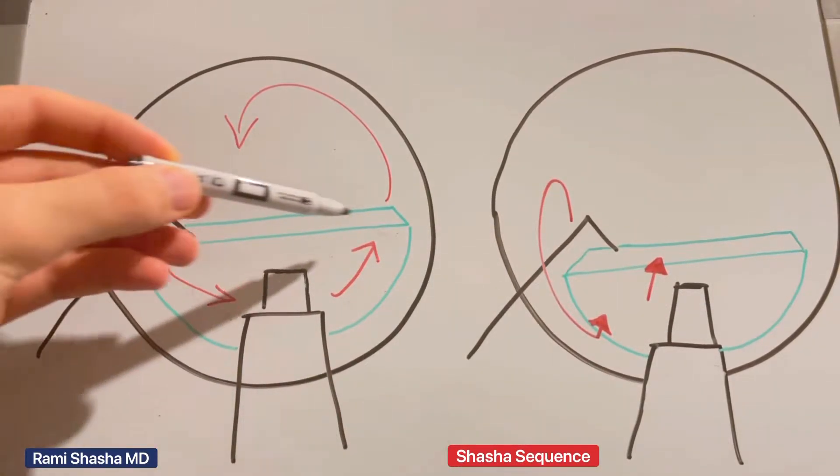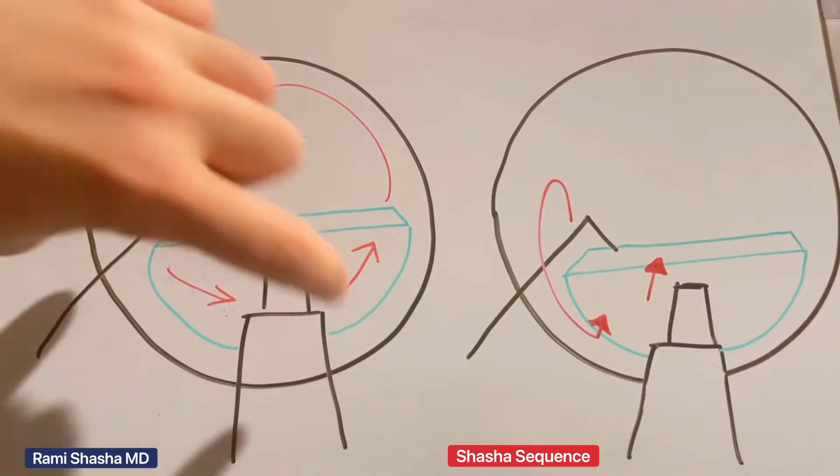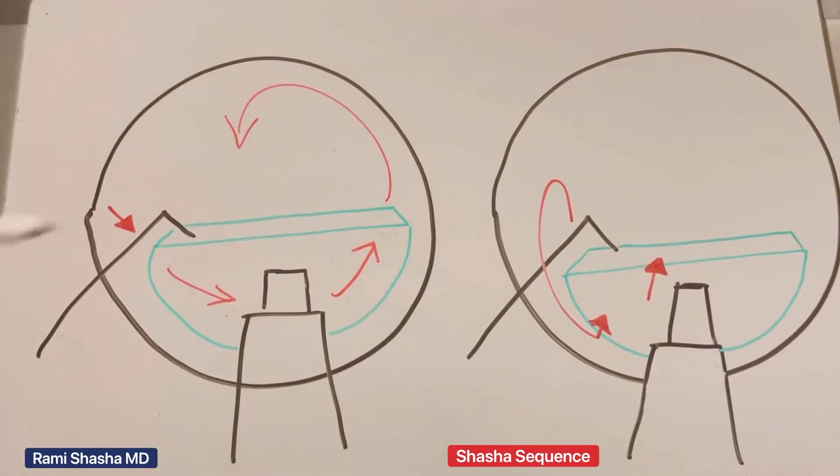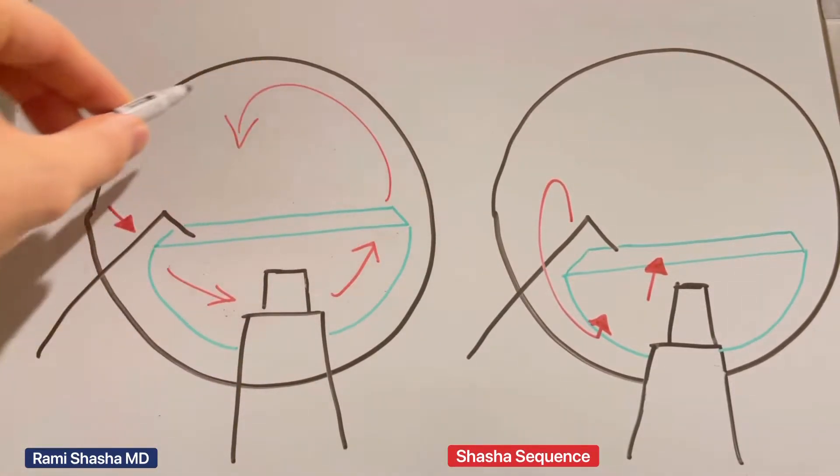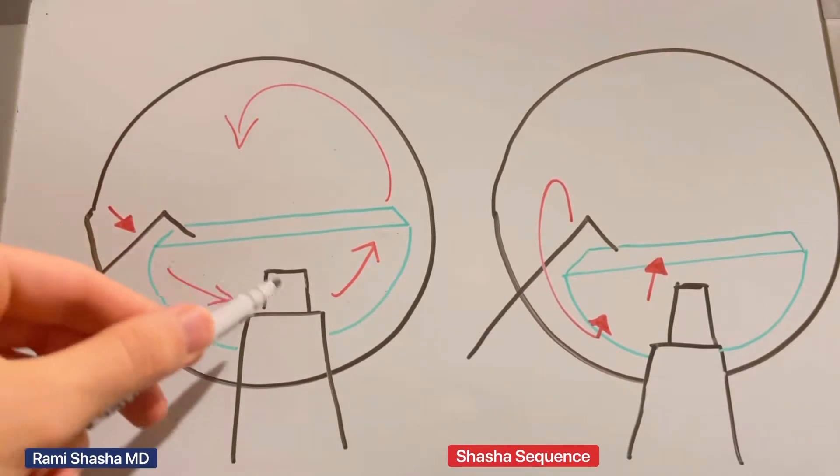When we traditionally have a hemi-nucleus, we use the chopper to push on the hemi-nucleus. That way the hemi-nucleus rotates slowly all the way around, so the hemi-nucleus is directly facing the phaco tip.